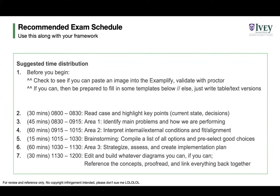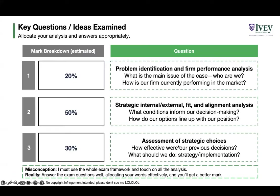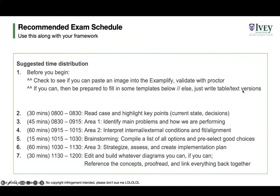The next 45 minutes you should split on area one — understanding the problem and analyzing how well the firm is performing. Afterwards, spend around an hour putting together a strategy triangle on the Diamond-E as well as your internal and external frameworks to determine how well it fits, then propose some solutions. It's actually a good idea to sit for a bit, maybe grab a piece of paper and brainstorm everything you can possibly do, because those 15 minutes can really set you apart.